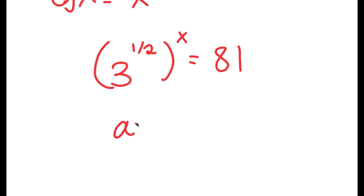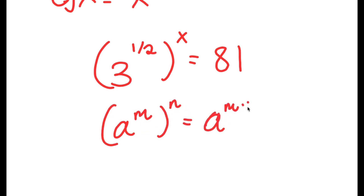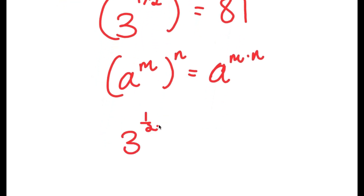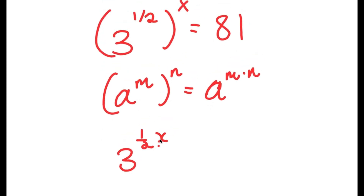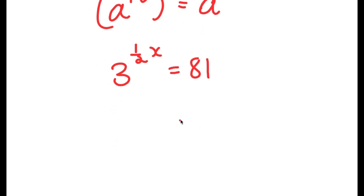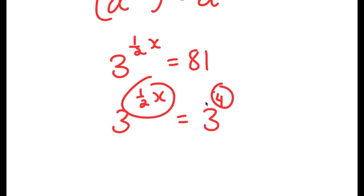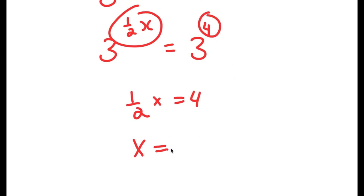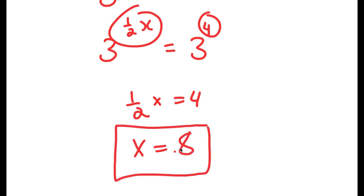If I have something in the form a to the power of m to the power of n, this is equal to a to the power of m times n. So 3 to the power of 1 half to the power of x equals 3 to the power of 1 half times x, which is simply 1 half x, and this is equal to 81. Now 81 is the same thing as 3 to the power of 4. So 1 half x is equal to 4, and x is equal to 8.